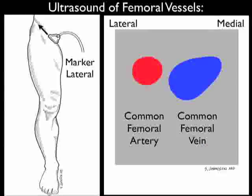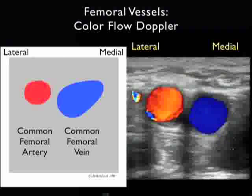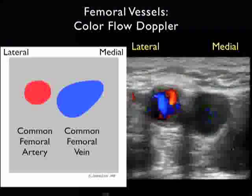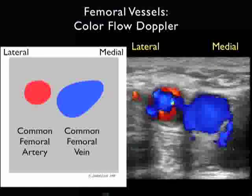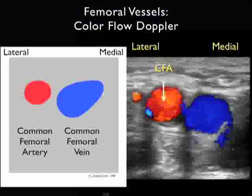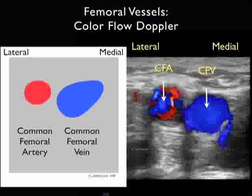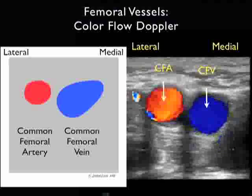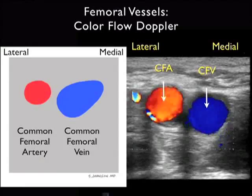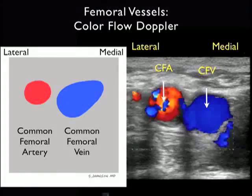Here we see the ultrasound findings when placing the probe as shown. The probe is placed with the marker dot laterally, just inferior to the inguinal ligament over the common femoral artery and vein. Notice that the common femoral vein will be seen medial to the common femoral artery. Using color flow Doppler, we can observe pulsatile flow within the common femoral artery located just lateral to the common femoral vein, and the basic hum of blood flow within the common femoral vein seen medially.